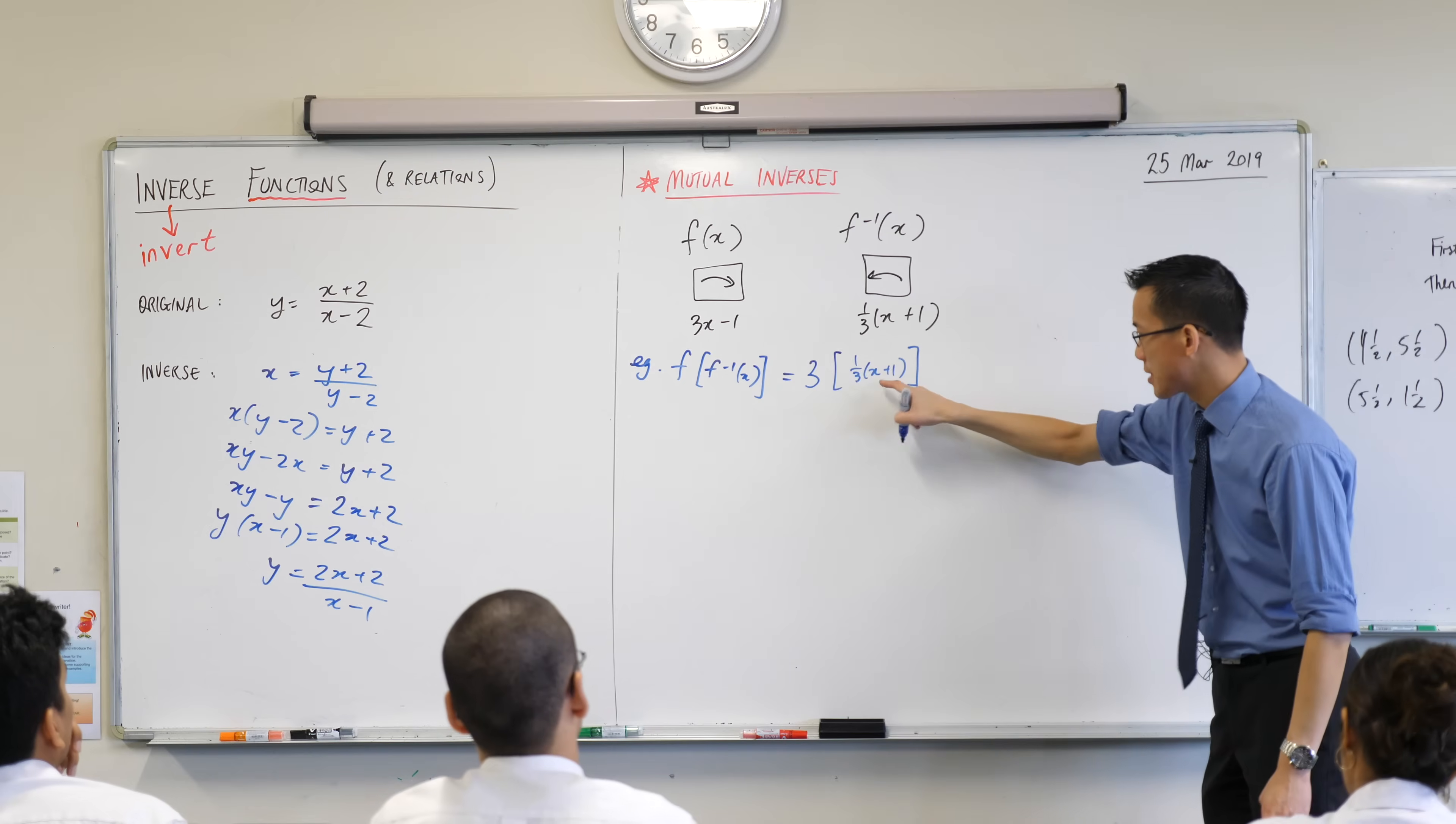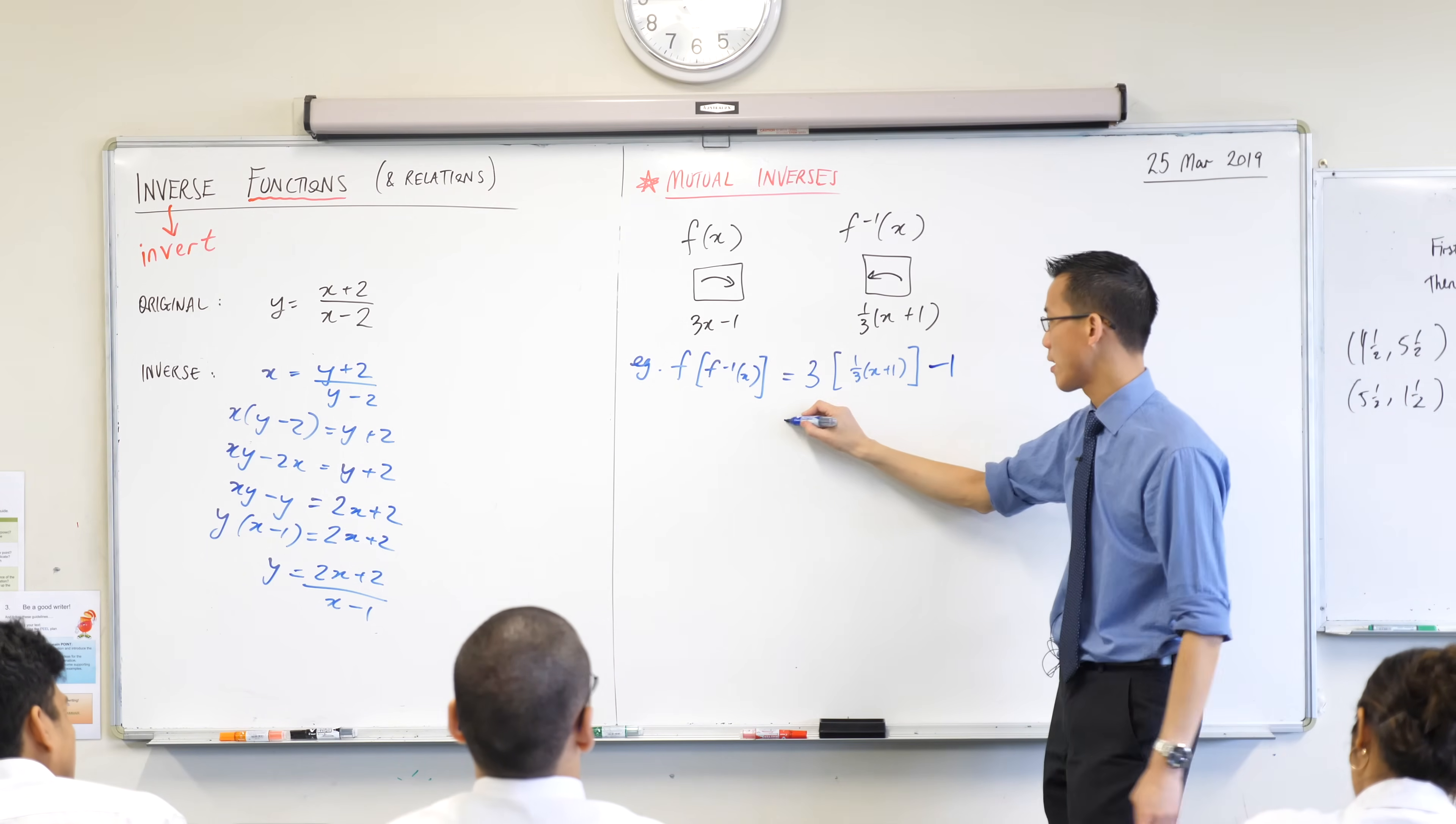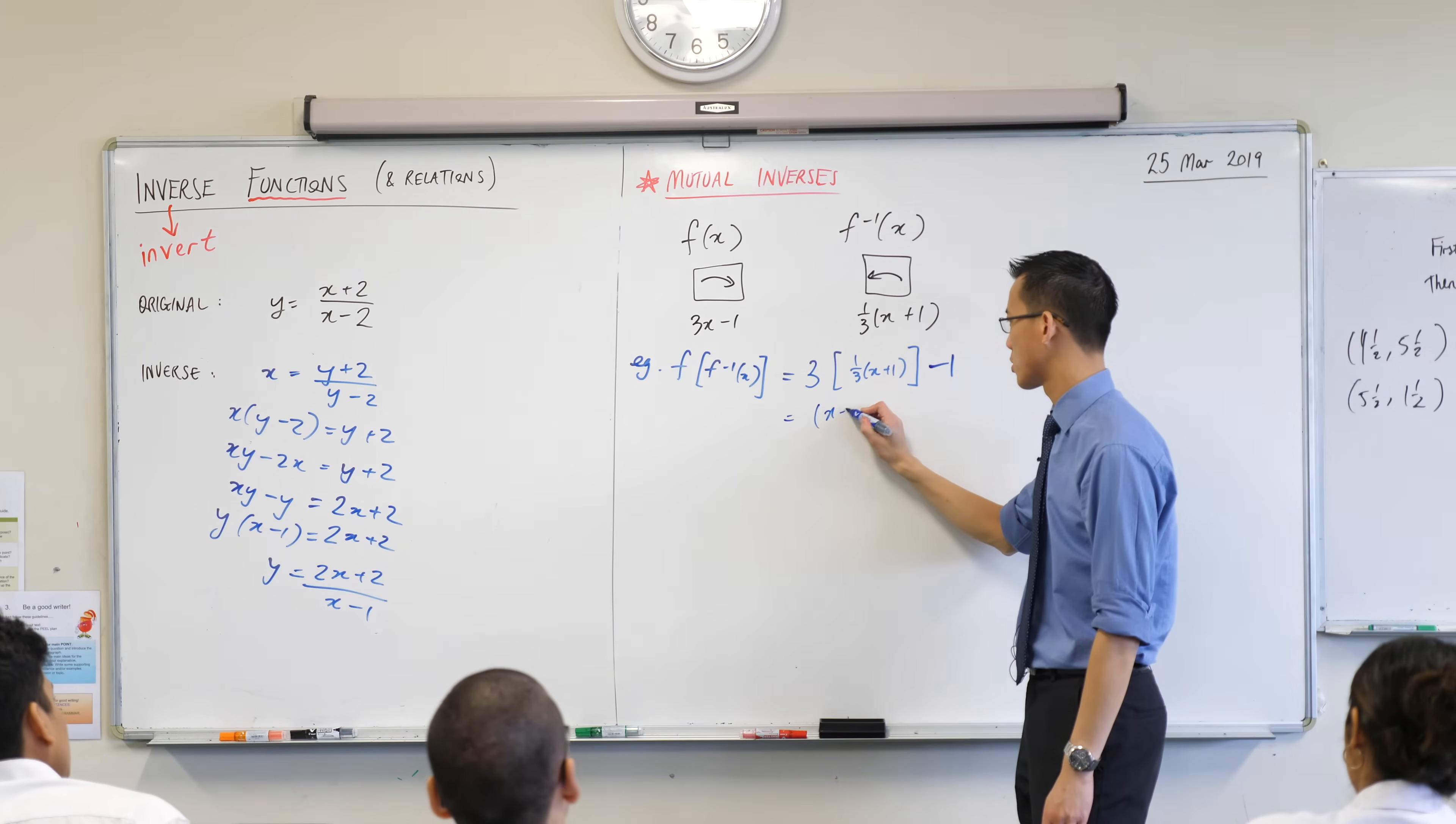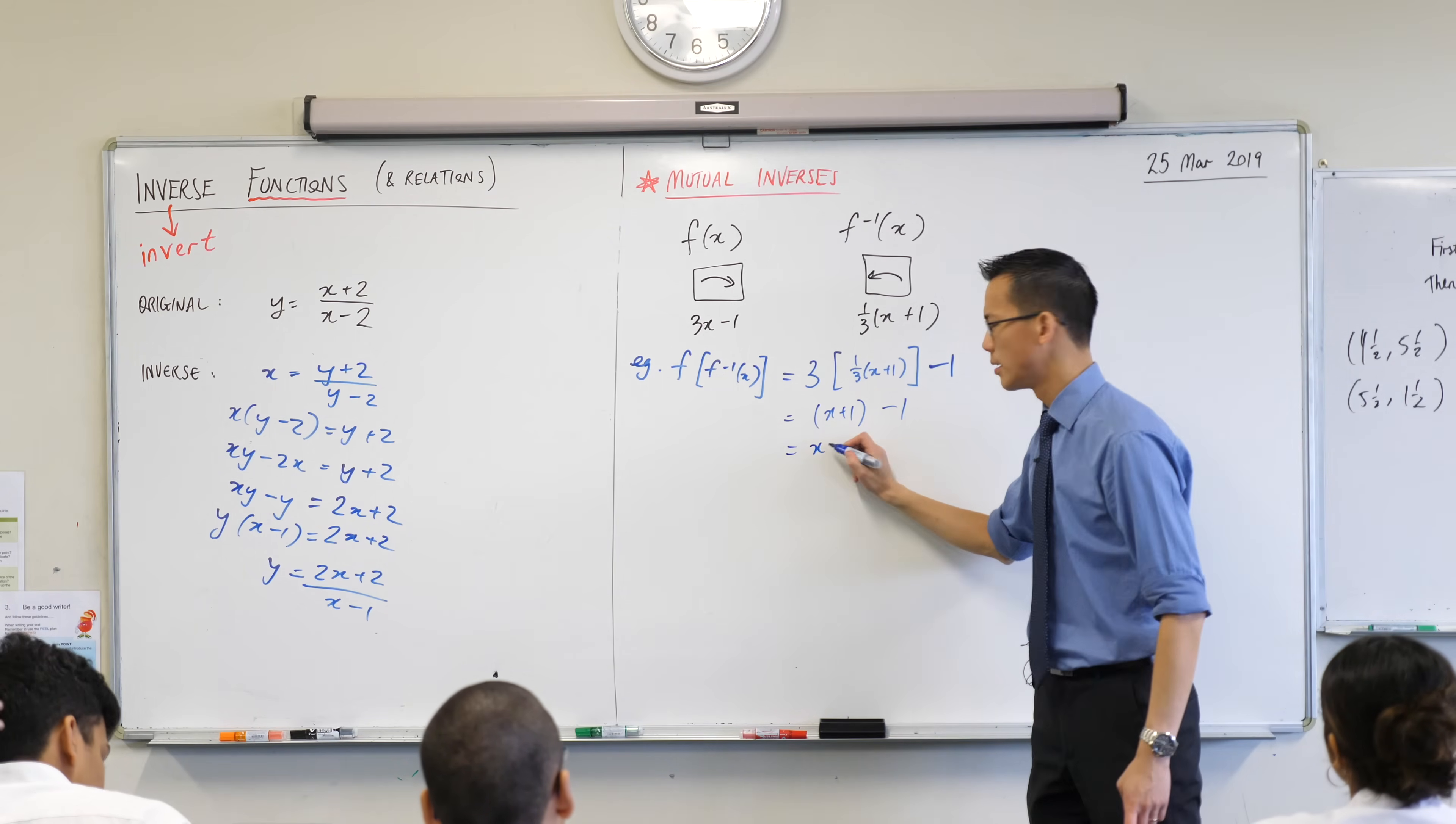Three times that, take away one. Now watch what happens as you start to unpack this algebraically. What happens to that three and that one-third? Yeah, they just cancel each other out, so you just end up with x plus one, and then there's this take away one hanging out on the end. What does that become? X.